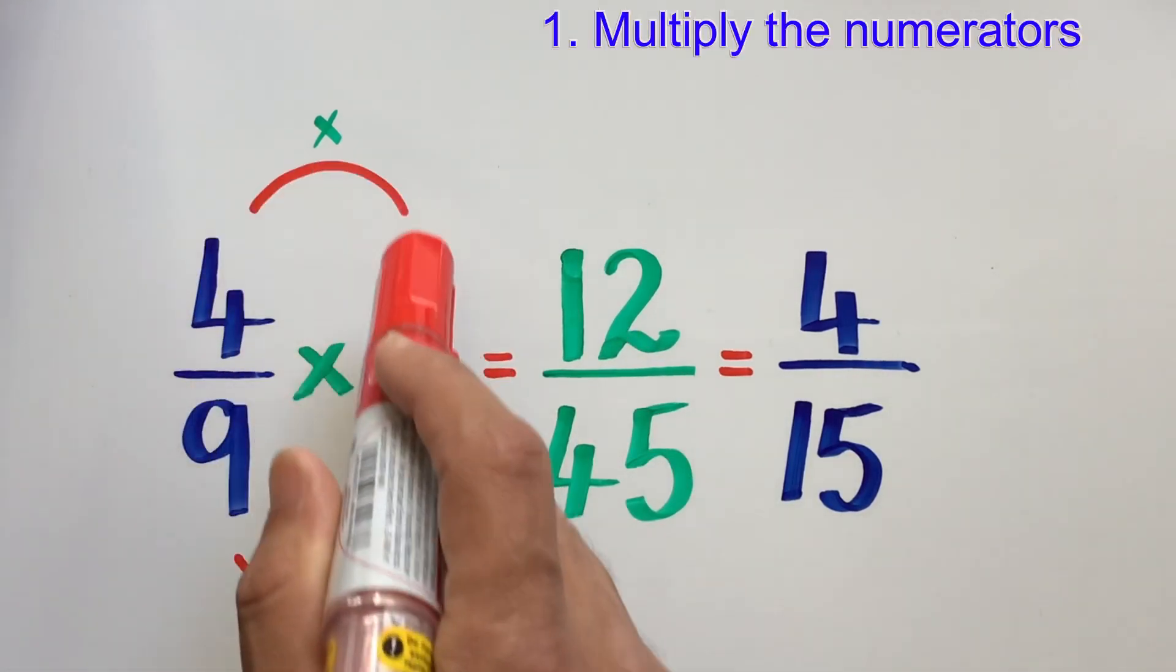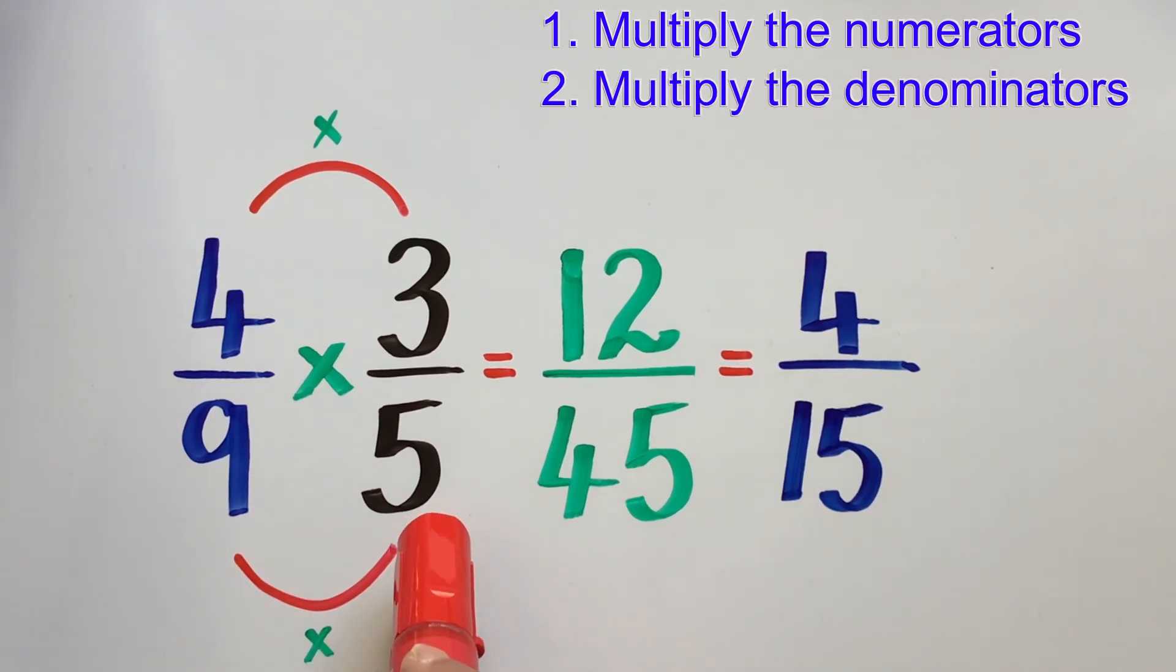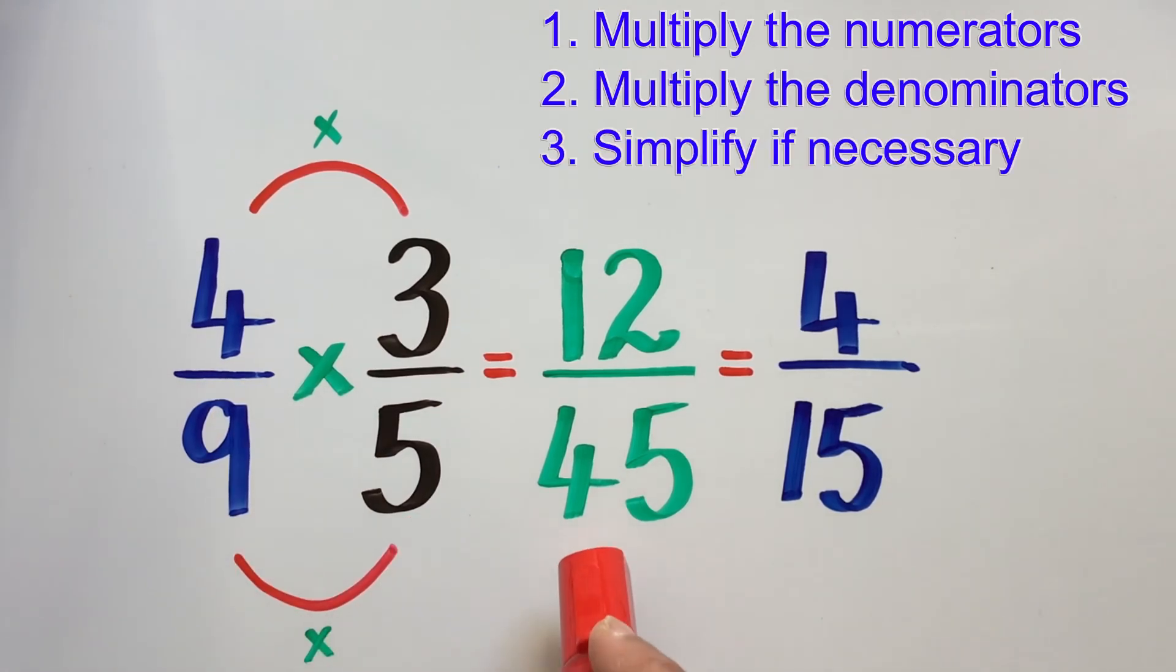You first multiply the top numbers or the numerators, then you multiply the denominators or the bottom numbers, and if necessary, reduce or simplify the fraction to its lowest form.